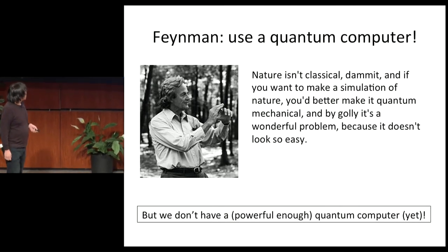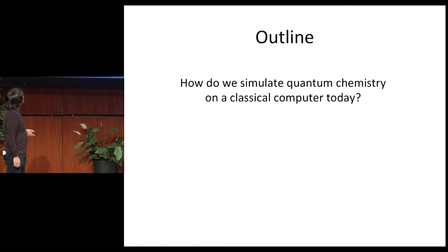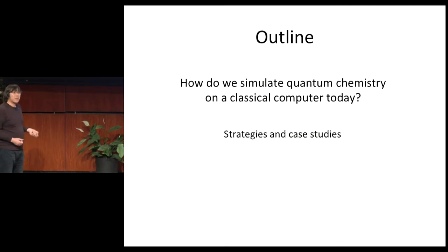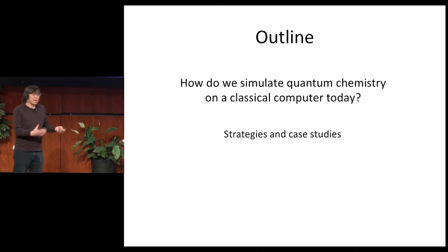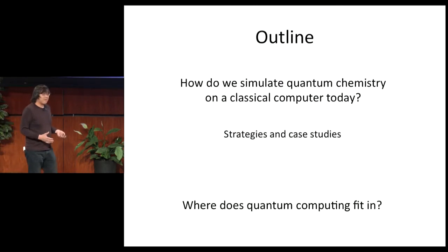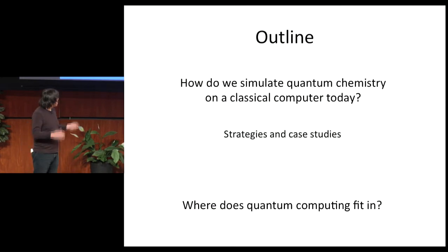My talk is about what we've been doing in the meantime — how we're able to simulate quantum chemistry problems on the classical computers we have today. I'll outline the different strategies we use to bypass the complexity in the Schrödinger equation and show a few case studies. This will take up about two-thirds of my talk. In the last third, I'll give a personal perspective on where quantum computing comes in — an opinion you should take with a grain of salt.